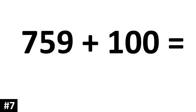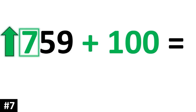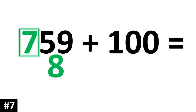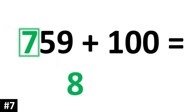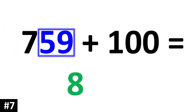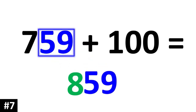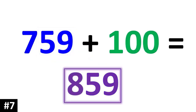759 plus 100. The hundreds digit goes up by 1, so the 7 is going to become an 8. The other numbers stay the same, so we have 859.